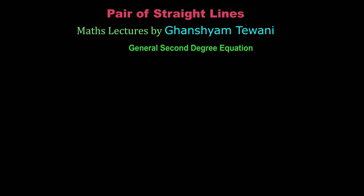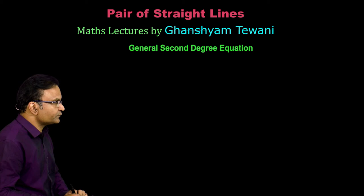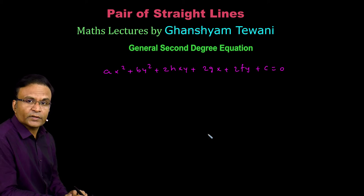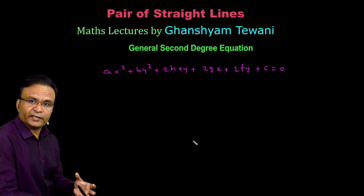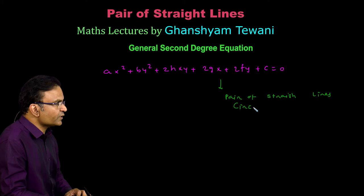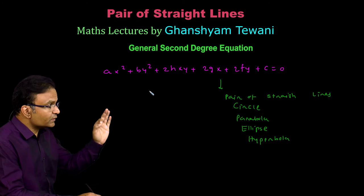Mathematicians have formed one general second degree equation for pair of straight lines. The general second degree equation is: Ax square plus By square plus 2Hxy plus 2Gx plus 2Fy plus C is equal to 0. This equation is called the general second degree equation in variables x and y. This equation may represent any of the conic sections depending upon the coefficients — such as pair of straight lines, circle, parabola, ellipse, or hyperbola.